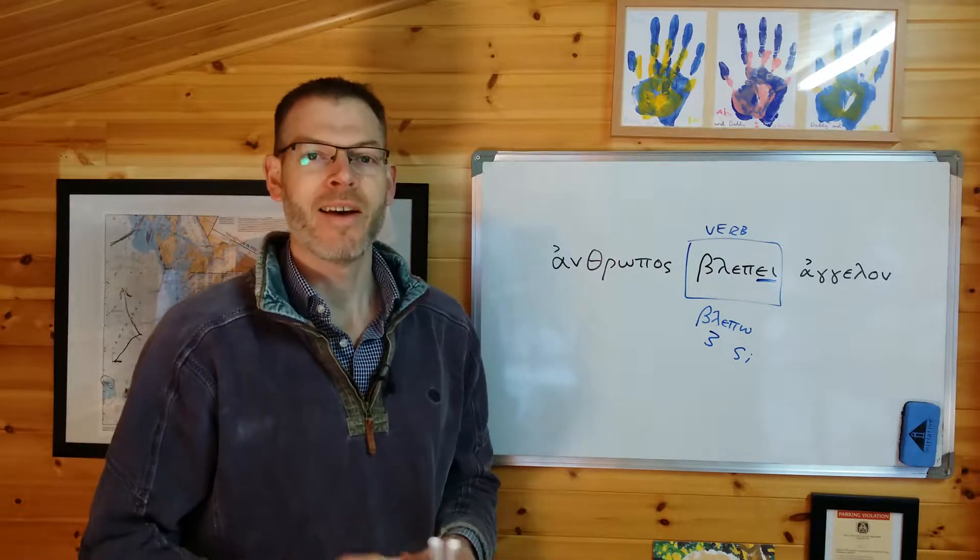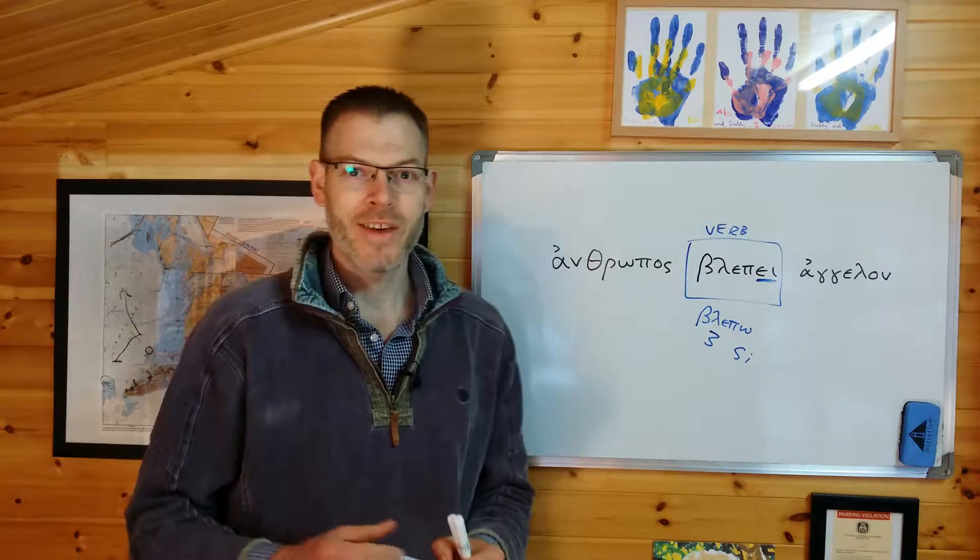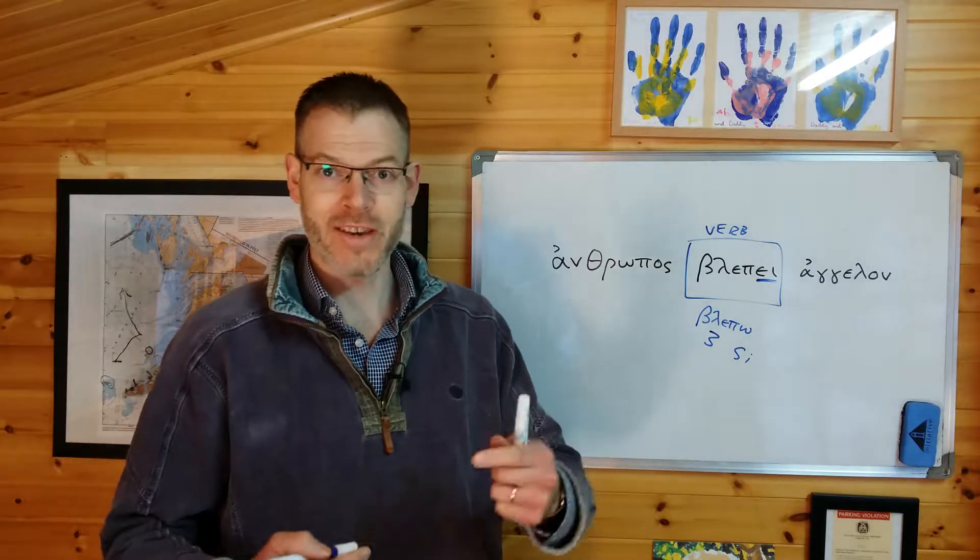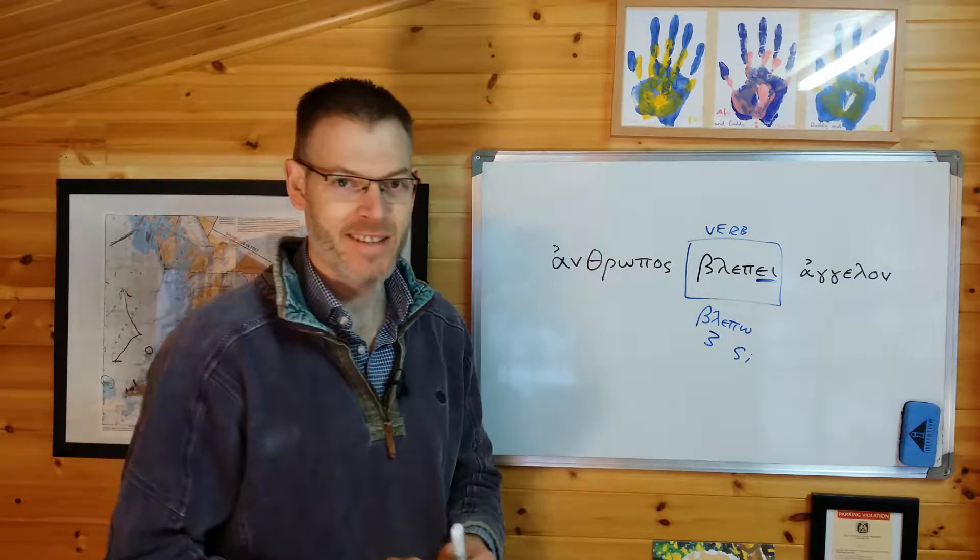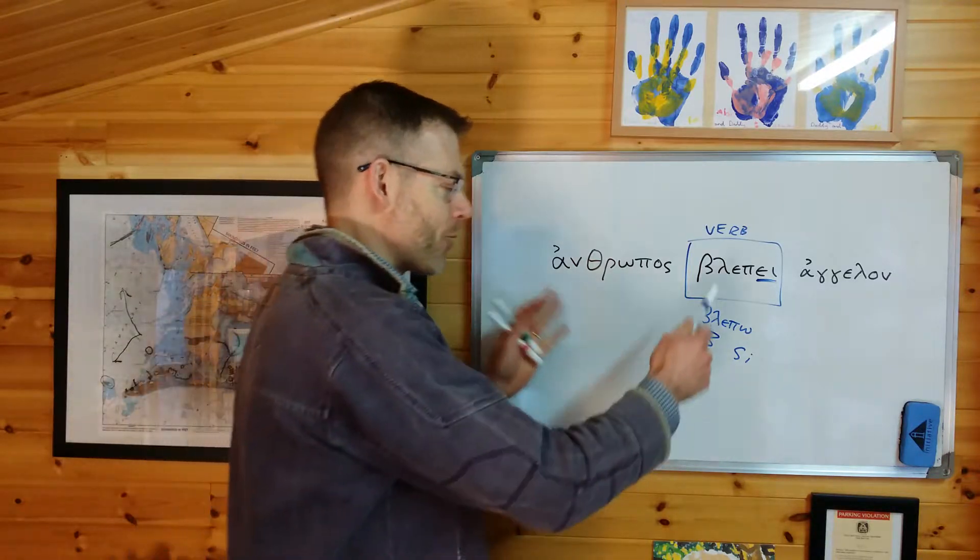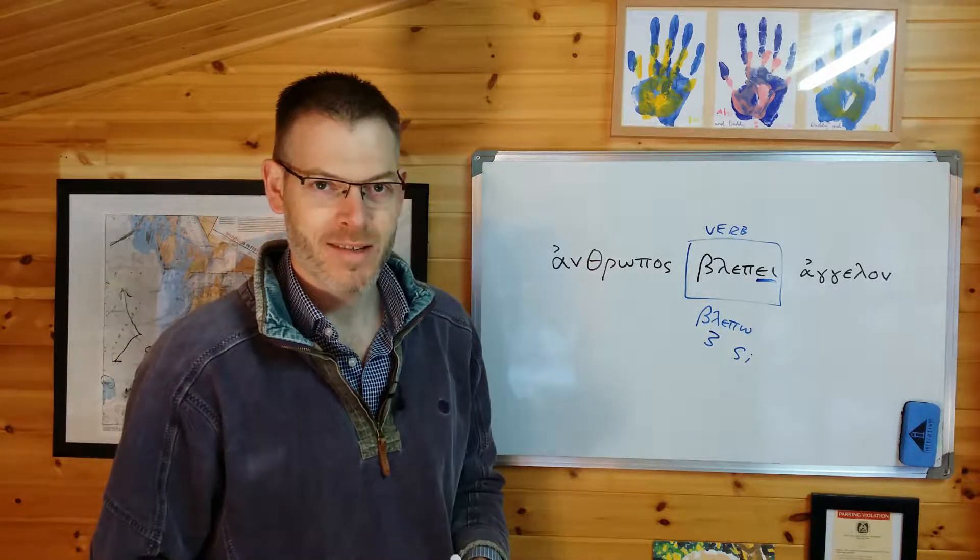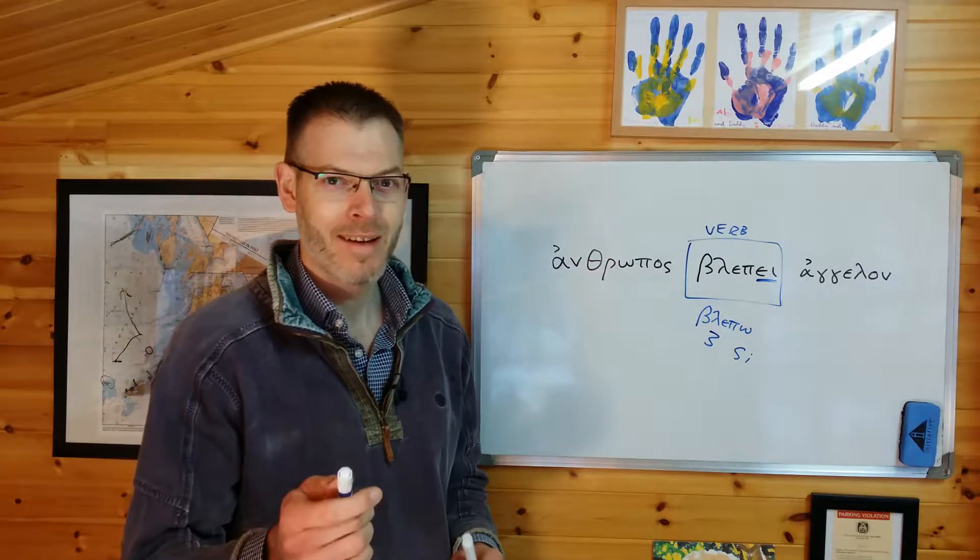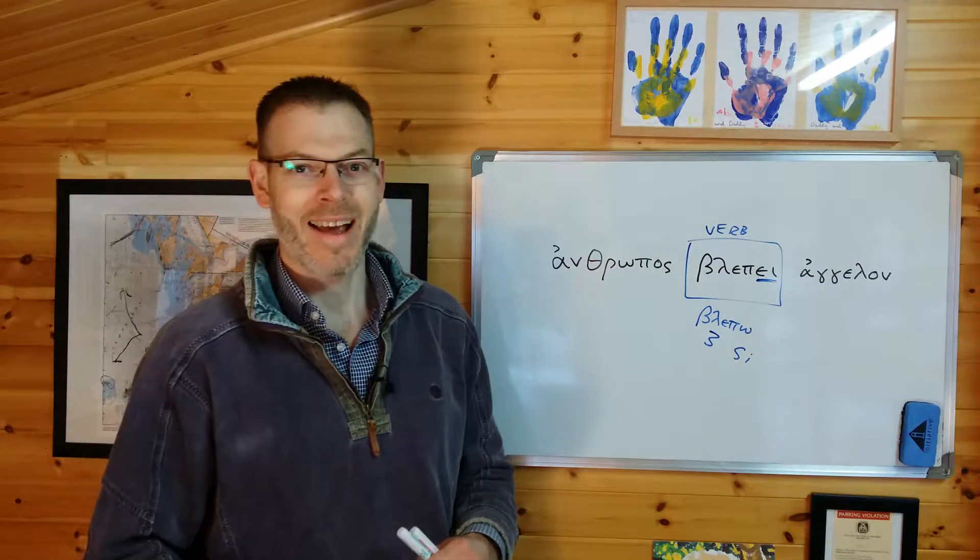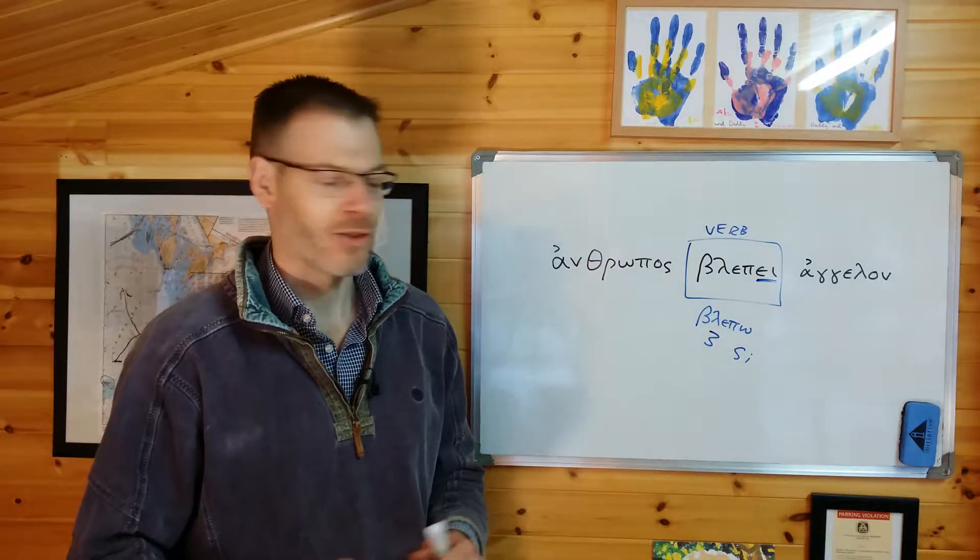Now, because this is a third person verb, it's quite likely that the subject of the verb will be something other than he, or she, or it. It will be something else in the sentence. And in this case, you can see that there are two other words in the sentence. Anthropos, meaning, pause the video, tell me what it means, rack your brains, can you remember? A man. And angelon, that's easy, come on, what does angelon mean? It comes from angelos, and it means angel or messenger.